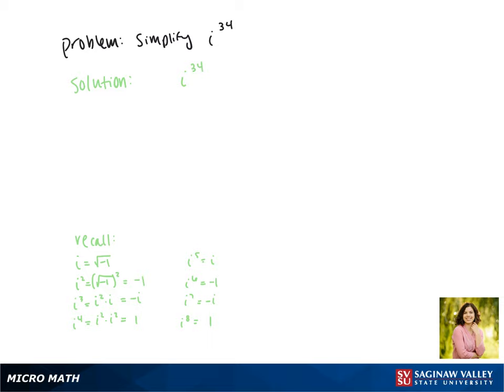To help us simplify i to the 34th, let's look to the closest multiple of 4 without going over. The closest multiple of 4 is 32. So let's break this up into i to the 32nd times i squared.